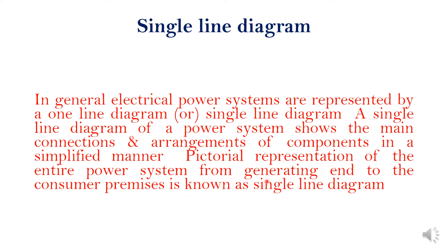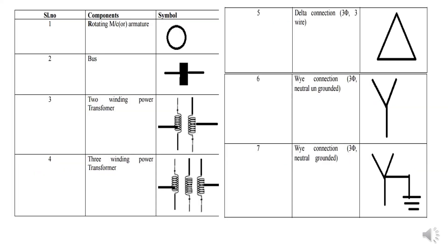A pictorial representation of an entire power system from the generating end to the consumer premises is known as a single-line diagram — it starts from the generating end and ends at the consumer premises. Next, I am going to explain the symbols used in the single-line diagram.